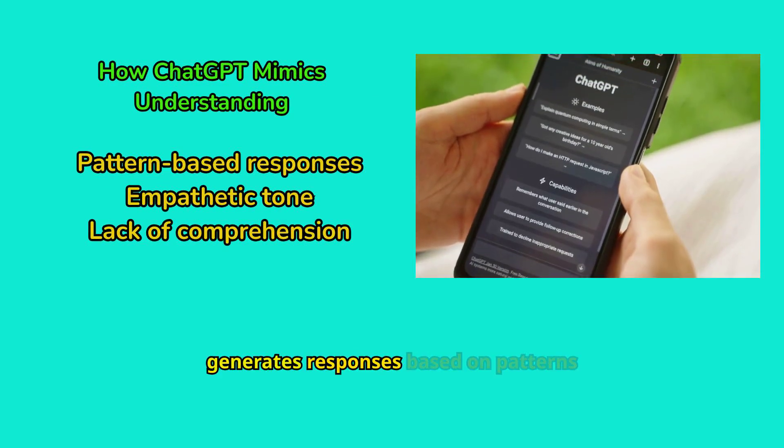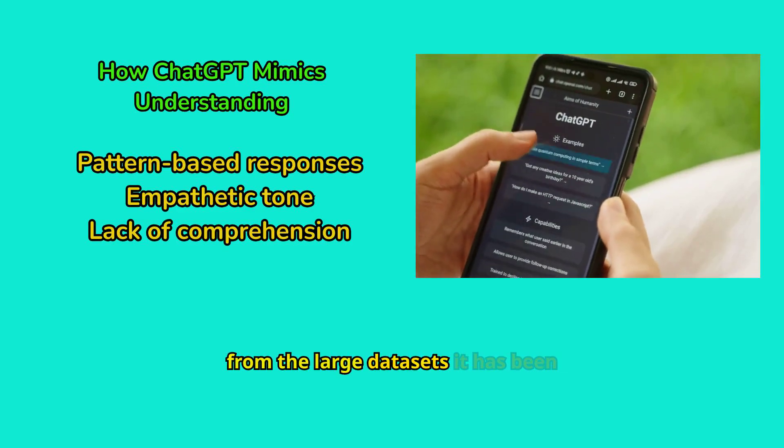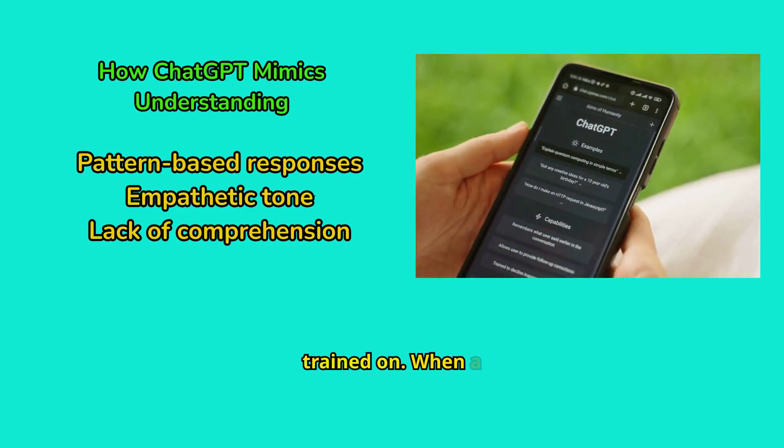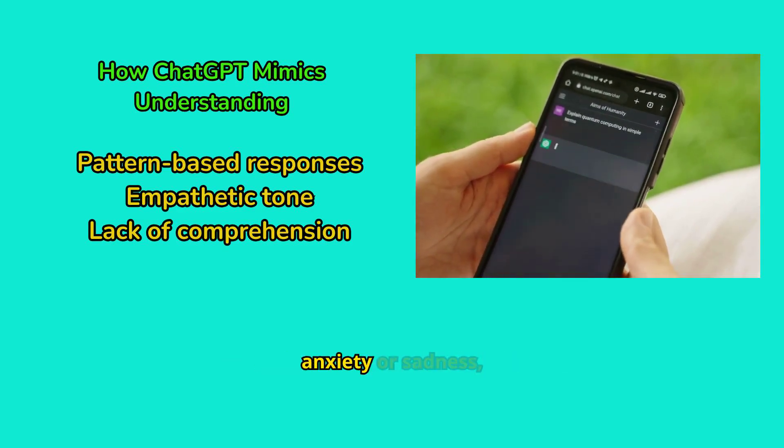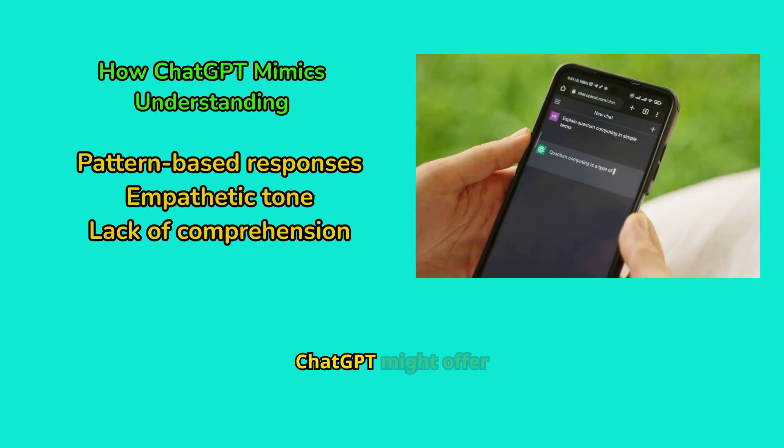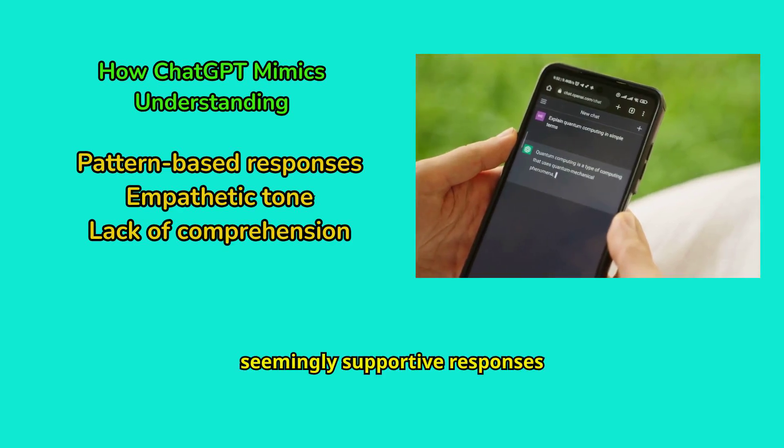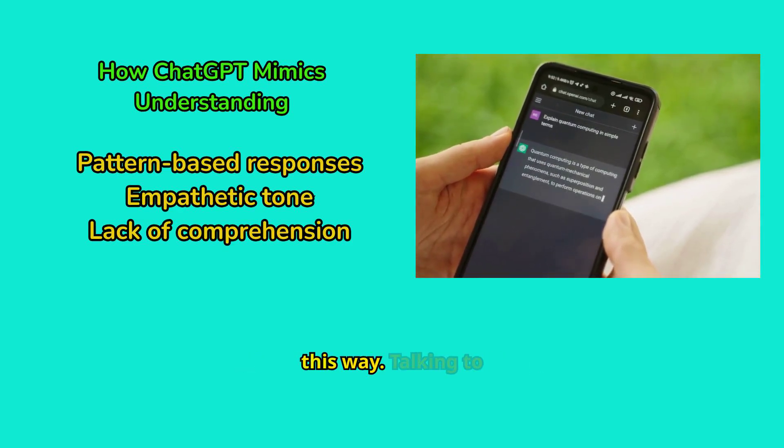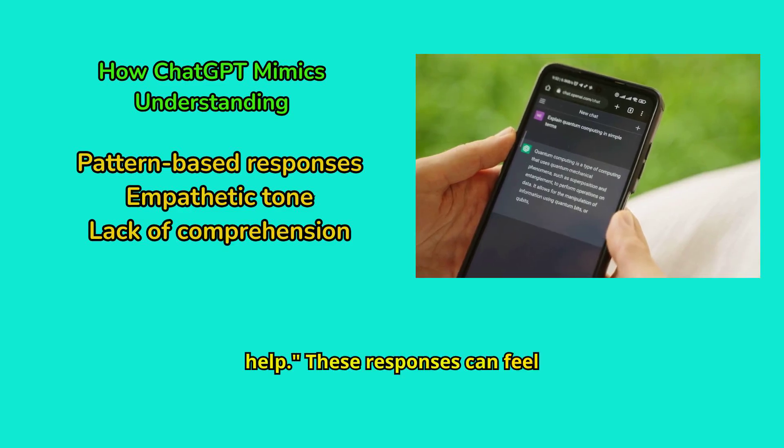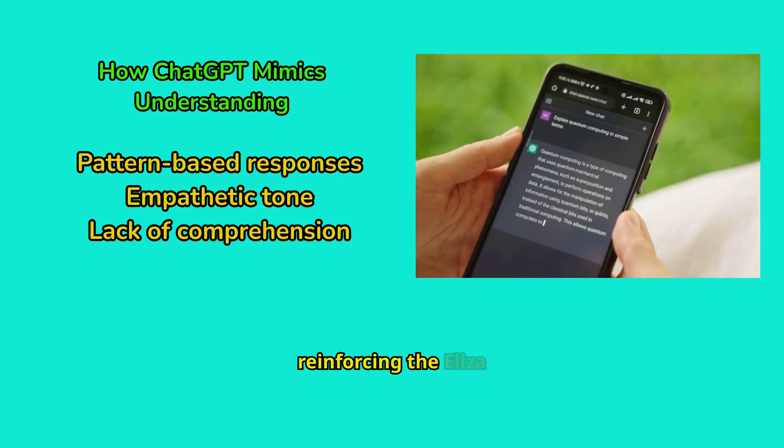ChatGPT generates responses based on patterns from the large datasets it has been trained on. When a user expresses emotions like anxiety or sadness, ChatGPT might offer seemingly supportive responses like, 'I'm sorry you're feeling this way. Talking to someone you trust might help.' These responses can feel personal and thoughtful, reinforcing the ELISA effect.